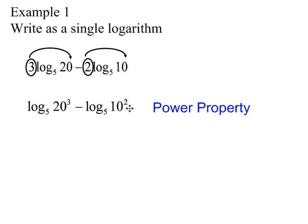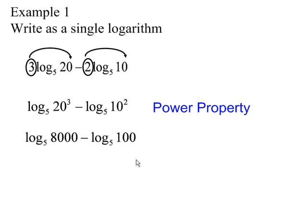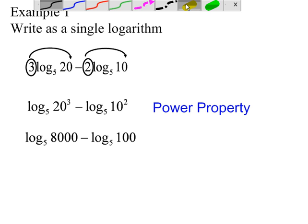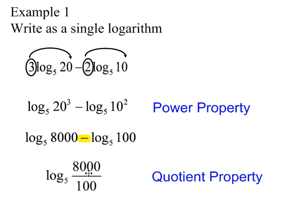Let's simplify 20 to the 3rd and 10 to the 2nd. 20 to the 3rd is 8,000 and 10 to the 2nd is 100. As you can see, we are subtracting these two logarithms and they have the same base 5, so we can rewrite it as a single logarithm. The quotient property allows us to do that, giving us log base 5 of 8,000 divided by 100. Simplifying, 8,000 divided by 100 is 80, so we get log base 5 of 80. That's our final answer — we rewrote it as a single logarithm.